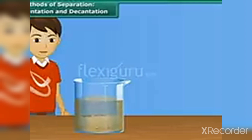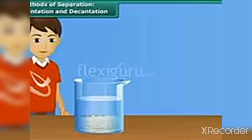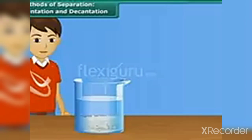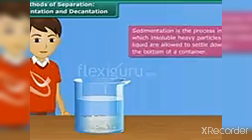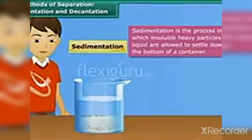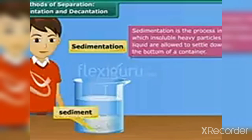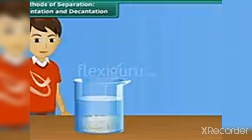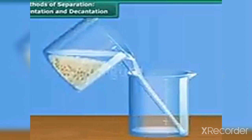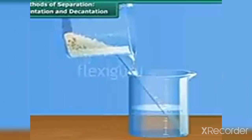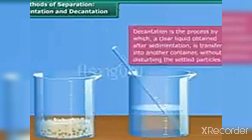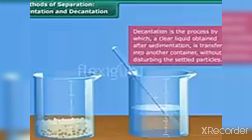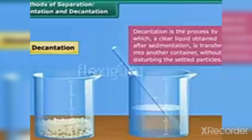We have mixed water and sand in this mixture. Now, if we leave it without touching it, what will happen? The sand will settle at the bottom layer and the upper layer will show clear water. This process is known as sedimentation — the sand settles as sediment and the water above becomes purified. The process of pouring off the clear water is called decantation.